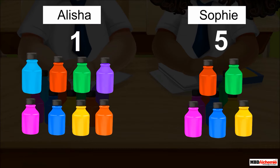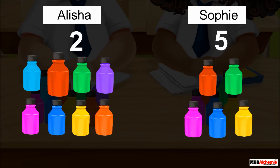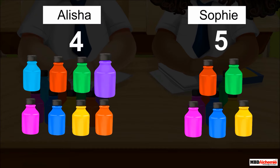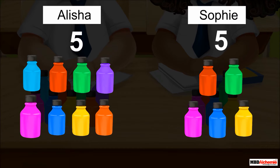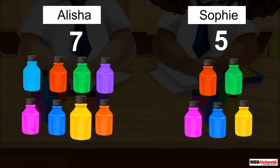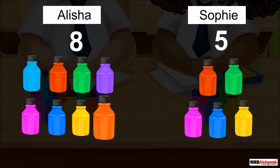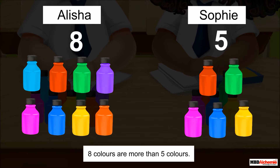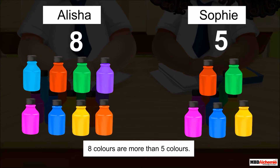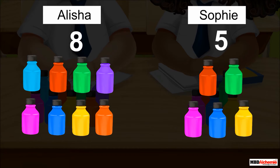And Alicia brought 1, 2, 3, 4, 5, 6, 7 and 8 — 8 watercolors. So 8 colors are more than 5 colors. Thus, we can say that Alicia brought more watercolors and Sophie brought less watercolors.